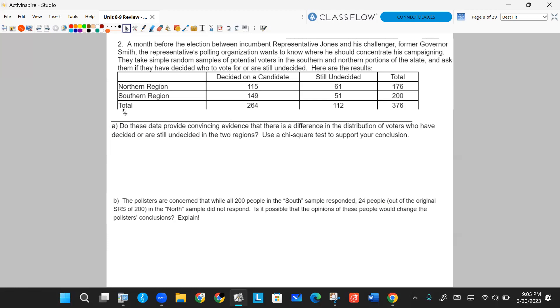Letter A says, do these data provide convincing evidence that there is a difference in the distribution of voters who have decided or are still undecided in the two regions? Use a chi-square test to support your decision. Part B is going to ask, the pollsters are concerned that while all 200 people in the south sample responded, 24 people out of the original SRS of 200 in the north sample did not respond. Is it possible that the opinions of these people would change the pollsters' conclusions? Explain.